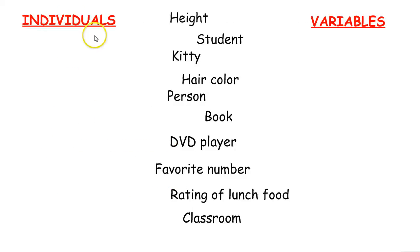So let's practice distinguishing individuals from variables. Height is something you would use to describe someone. How tall are they? So that would be a variable. A student would be a noun, a thing, something you can study. So that's an individual.